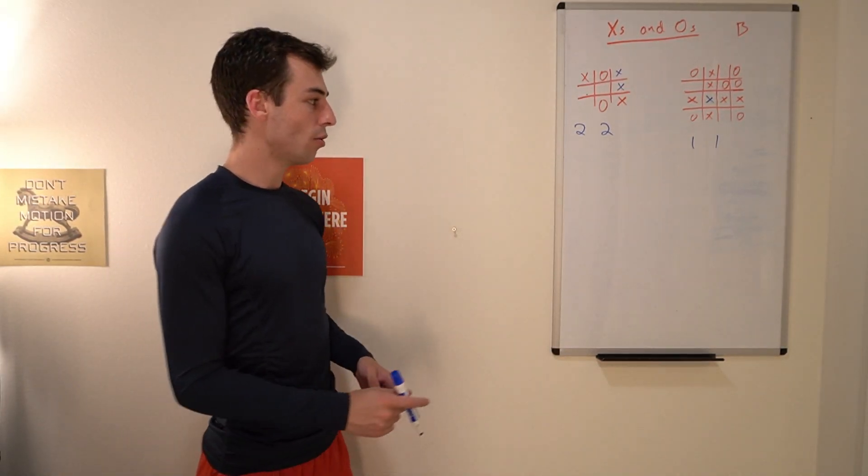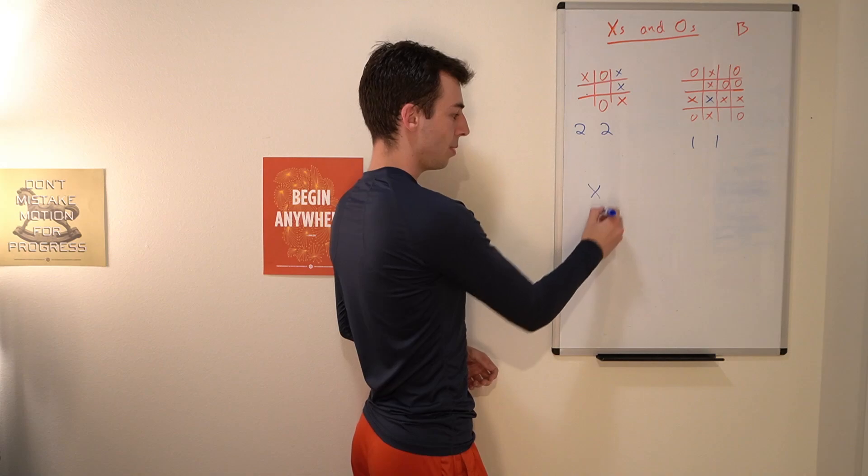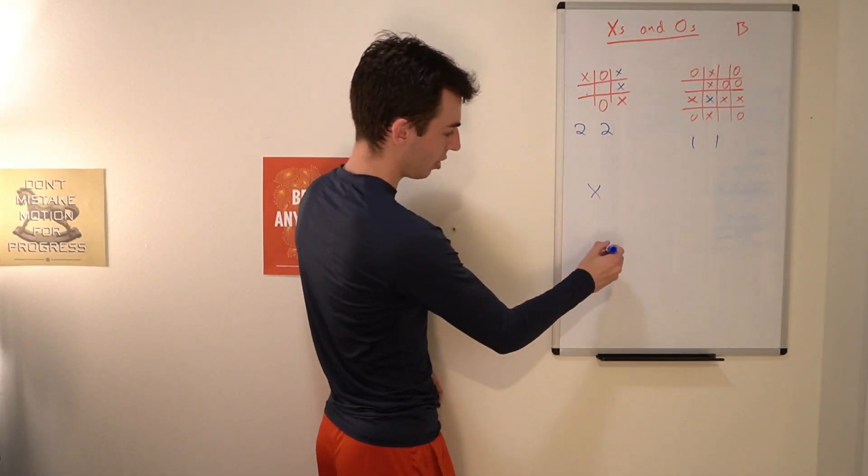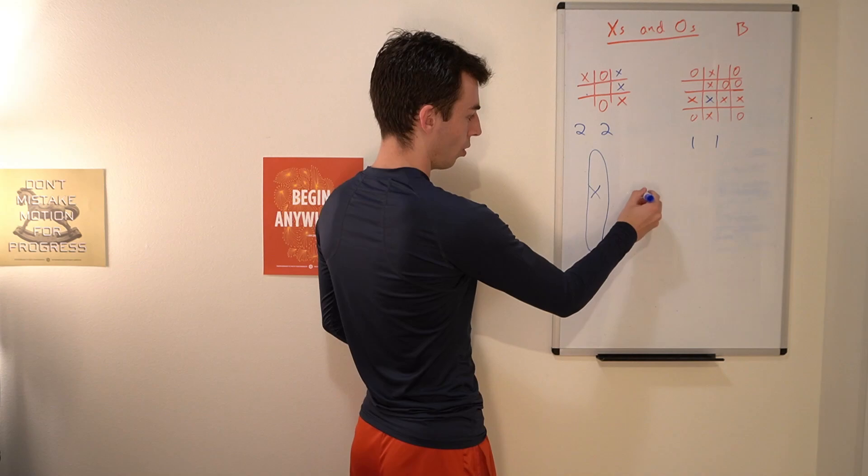Now the one time in which it might overcount is if we're only placing one X, because then it isn't obvious if we're placing this X whether we're trying to win in this column or in this row.